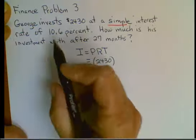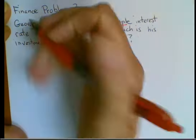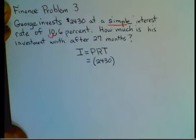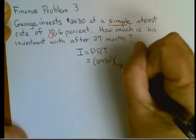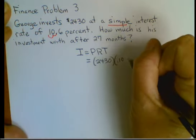R is our rate, 10.6. You have to switch it to a decimal. So two places to the left, .106.